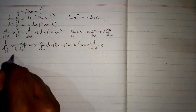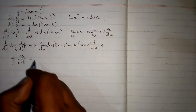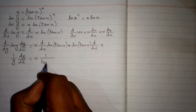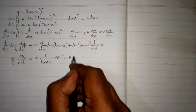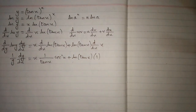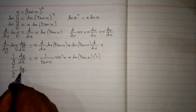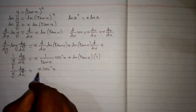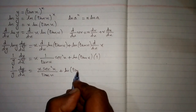The derivative of ln of 10x is 1 upon 10x multiplied by the derivative of 10x, which is sec square x, plus ln of 10x multiplied by the derivative of x which is 1. So we have 1 upon y times dy by dx is equal to x sec square x upon 10x plus ln of 10x.